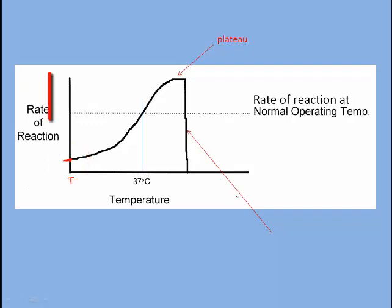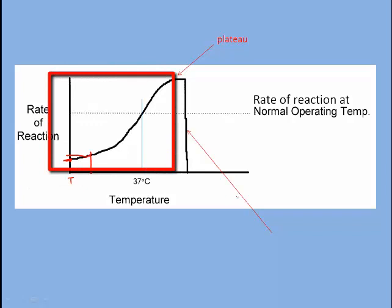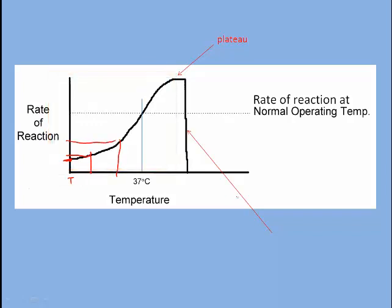As temperature increases, the rate of reaction actually increases, and this continues fairly steadily. At 37 degrees Celsius, we have a pretty good rate of reaction, and this is the rate of reaction at normal operating temperature. If you increase body temperature, the rate of reaction will continue to increase, but not for very many more degrees.